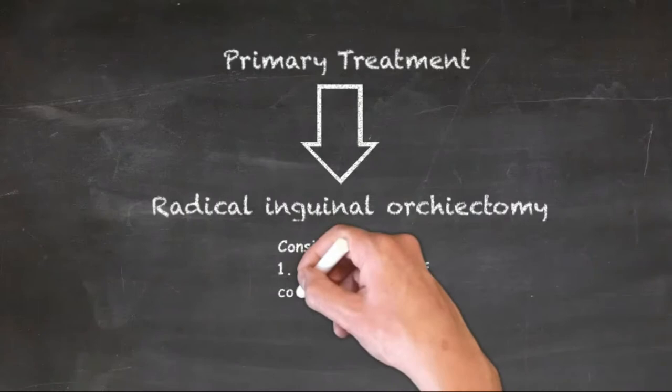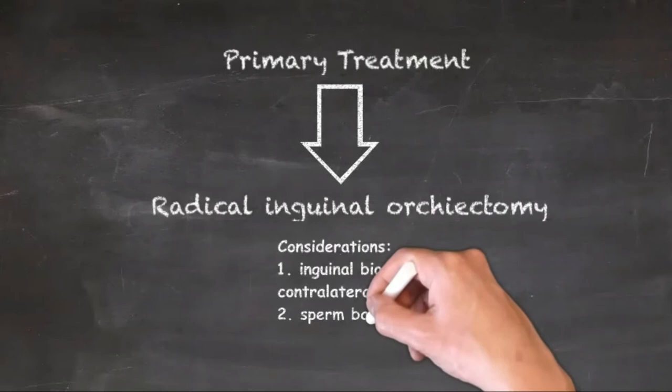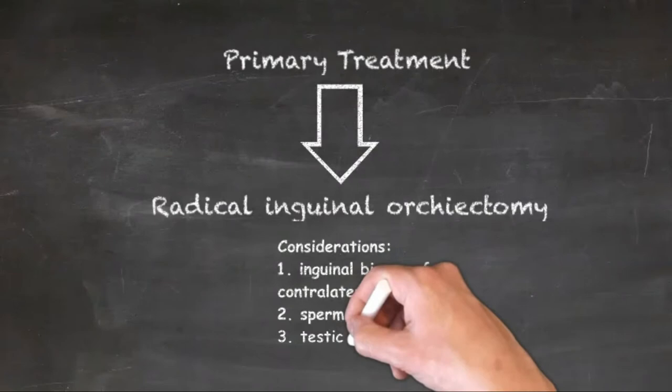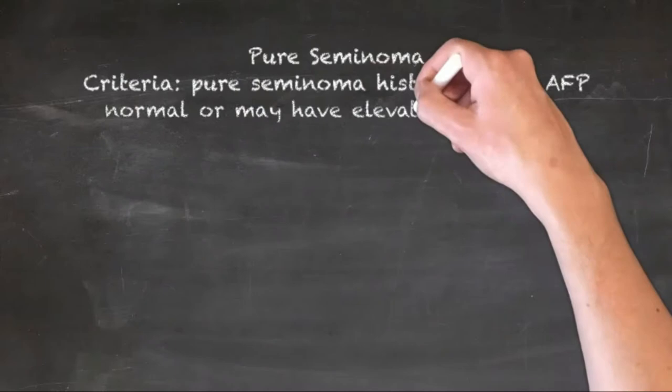Organ-sparing surgery can be attempted in special cases like bilateral tumor or solitary testes. Routine contralateral biopsy for diagnosis of carcinoma in situ should be discussed with a patient and is recommended in high-risk patients with testicular volumes less than 12 ml, a history of cryptorchidism, suspicious intratesticular mass, and age less than 40 years.